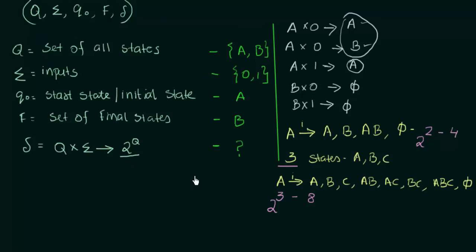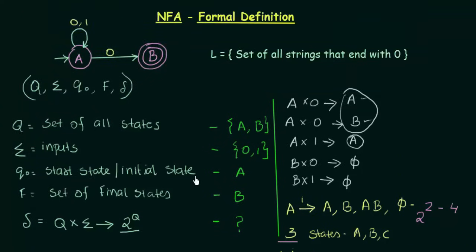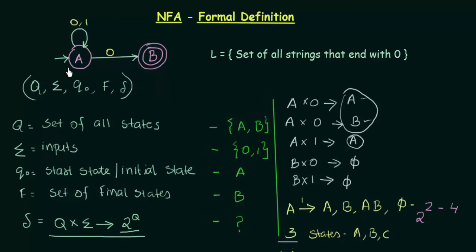So that was the formal definition of NFA. It is defined using five tuples: Q, Sigma, Q0, F, and Delta, where Q, Sigma, Q0, and F are the same as DFA, and the only difference is the transition function Delta which maps Q cross Sigma to 2 power Q. In the next lecture we will be explaining this particular example in more detail. Thank you for watching and see you in the next one.